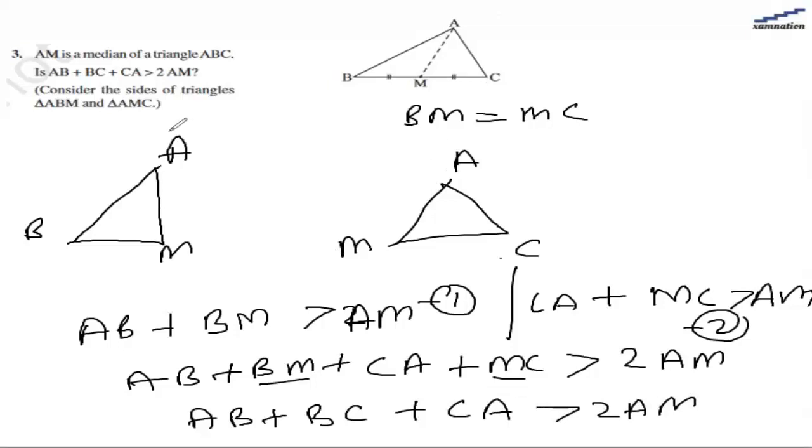So this statement is true: AB plus BC plus CA is greater than 2AM. We have proven this using the triangle property that the sum of two sides is greater than the third side. Thank you.